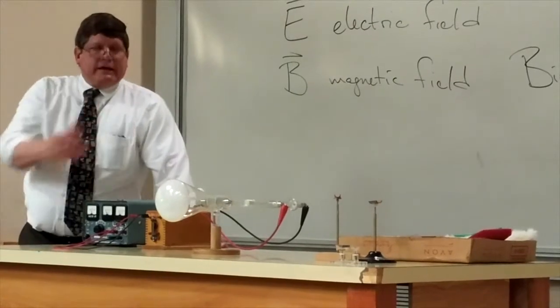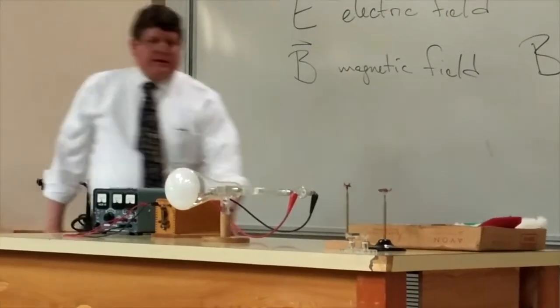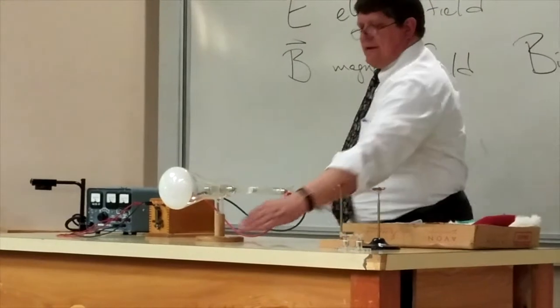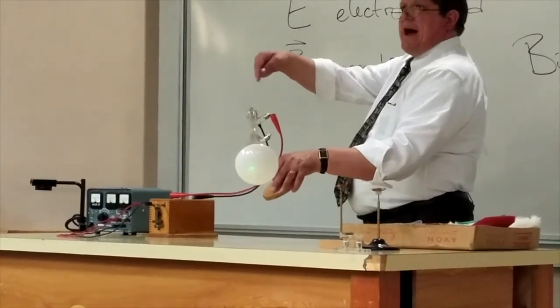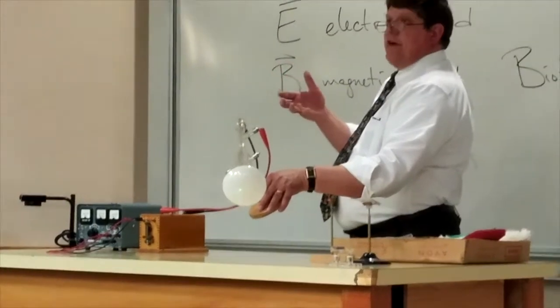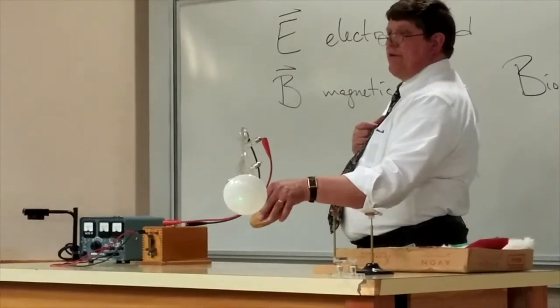This is the way TVs worked when I was alive. That's why they were so fat, because we had an electron gun in the back. What it was was just a very negative terminal. We call it a cathode.